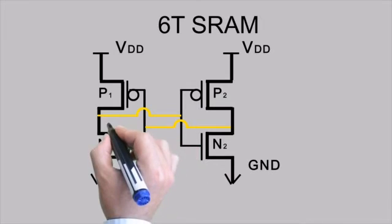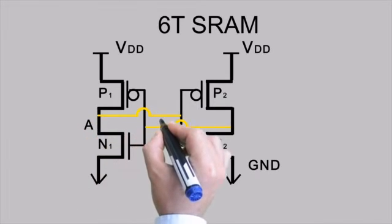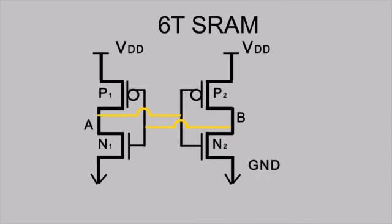Let's call this node as node A and this node as node B. Also at the output of both these inverters that is node A and node B.